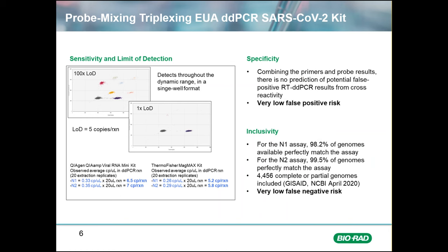Here's a bit more information about the SARS-CoV-2 ddPCR kit. The LOD achieved for this assay with two separate extraction methods was five copies per reaction. This assay was shown to have high inclusivity and specificity. For up-to-date information on performance and availability, you can visit the Biorad website.